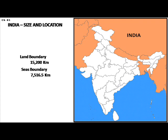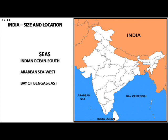The coastline of mainland India is about 6,100 kilometers. India is surrounded by water on three sides, and the Deccan Peninsula protrudes into the Indian Ocean.